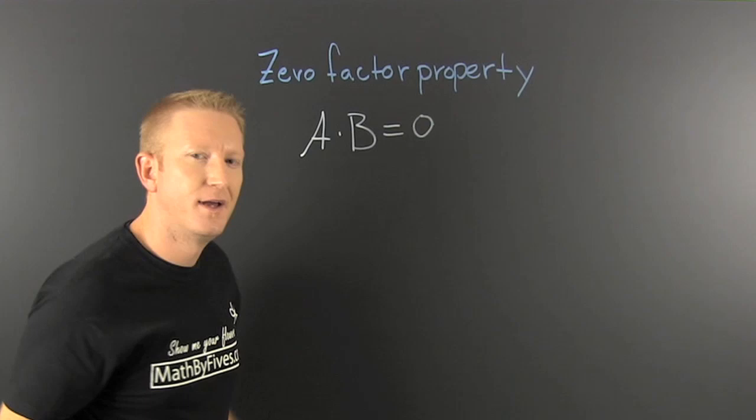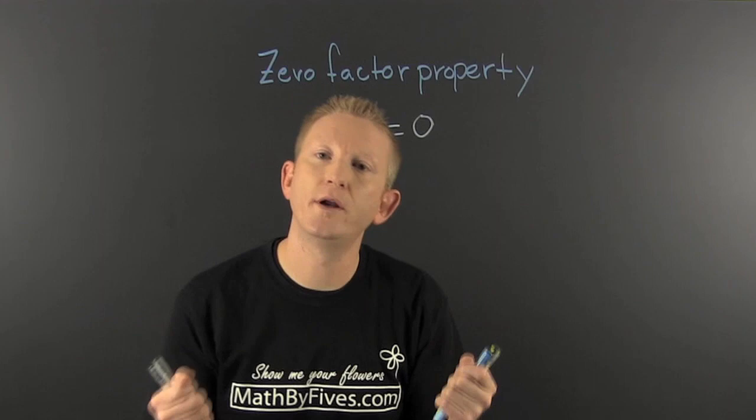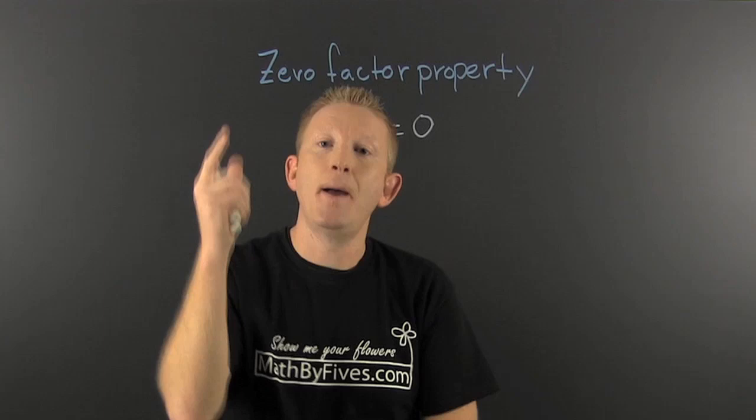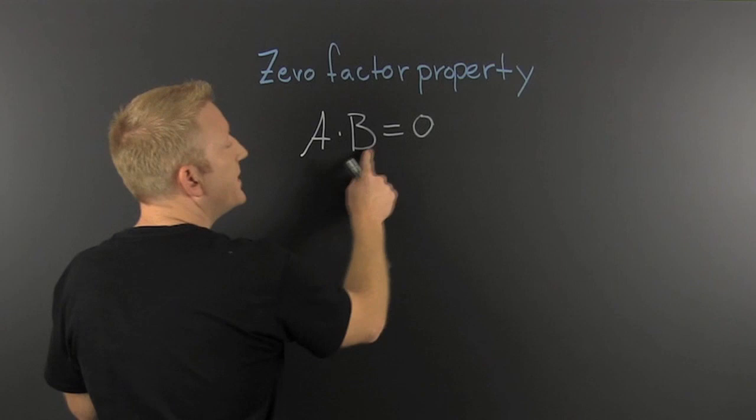It reminds me of an old riddle. You have two standard US coins, their sum is 55 cents, one of them is not a nickel. What are the two coins? It's a nickel and a 50 cent piece. I thought you said one of them was not a nickel. That's true, the other one has to be. And that's what we get here.